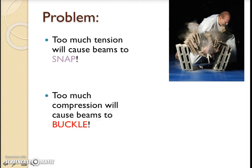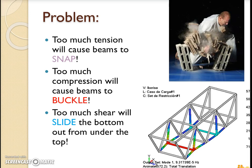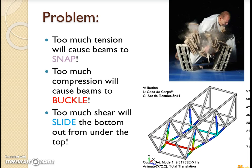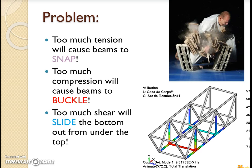Too much tension will cause beams to snap. Too much compression will cause beams to buckle. We know things will break when you put too much of a load on them. Too much pressure will slide the bottom out from under the top, causing the structure to sway and sag, and eventually fall over when the bottom is not under the top anymore — in fact, nothing is under the top.